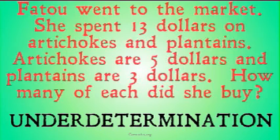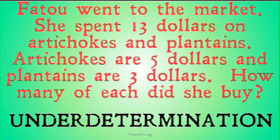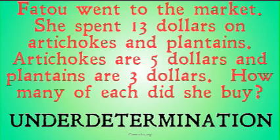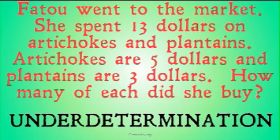To understand what underdetermination is, let's look at some examples. Imagine the following: Fatou went to the market. She spent $13 on artichokes and plantains. Artichokes are $5 and plantains are $3. How many of each did she buy? It should be clear that there's only one solution to this problem — namely, that she bought two artichokes and one plantain. The information we are given, the evidence we are provided with, determines a specific solution to the problem.